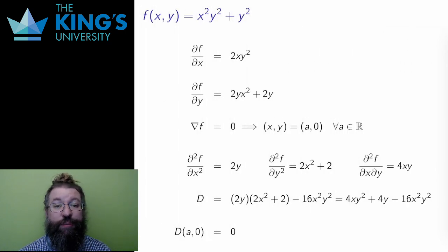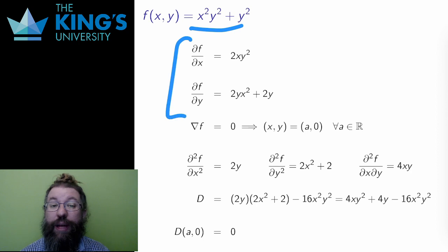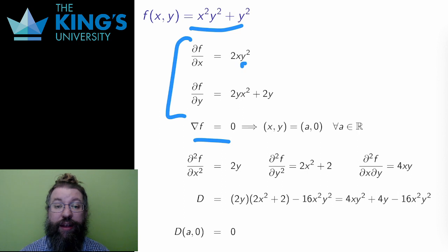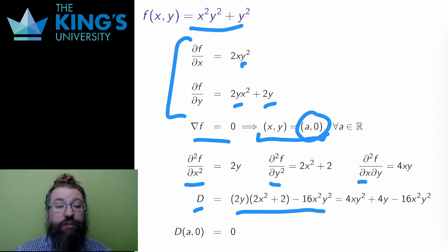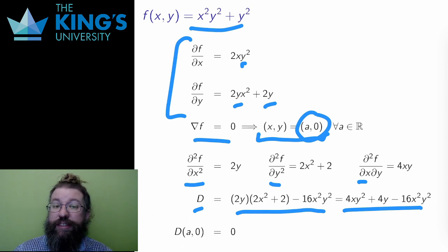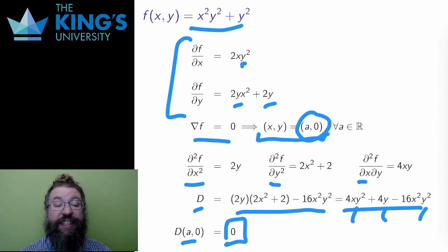That diversion into linear algebra over, let me do a few examples. Here is a scalar field in two variables. I calculate its partials; the gradient is zero at points where all the partials are zero. Solving this results in a system of equations, and in this case, as long as y is zero, both partials vanish — so all the points (a, 0) for any x value a are critical points. Then I calculate the second partials and the Hessian determinant. Since y shows up in every term of D, D is zero at all of these critical points. Therefore, the test is inconclusive here.